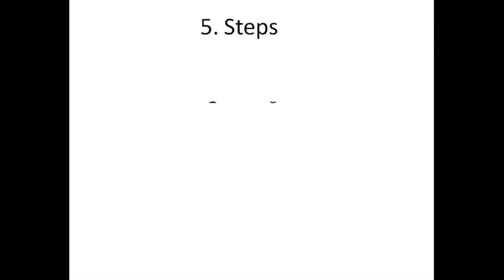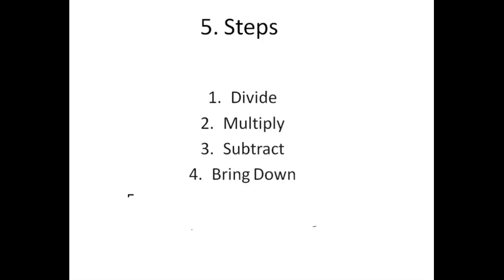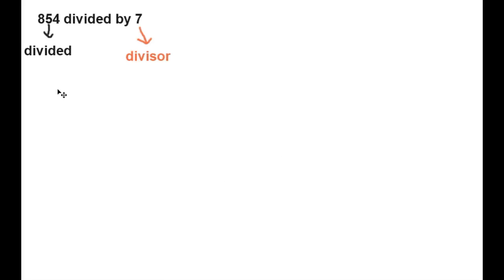Here are the five steps we are going to follow: first is divide, second multiply, third subtract, fourth bring down, and last repeat these steps as long as possible. Now let's start with an example of whole number division. We will follow these five steps and then compare with polynomial function.